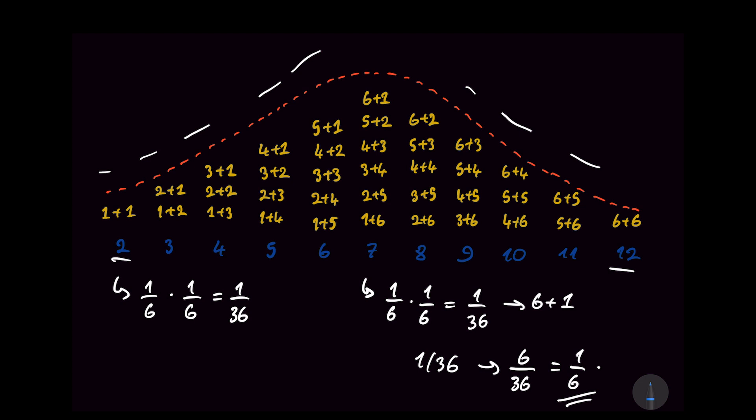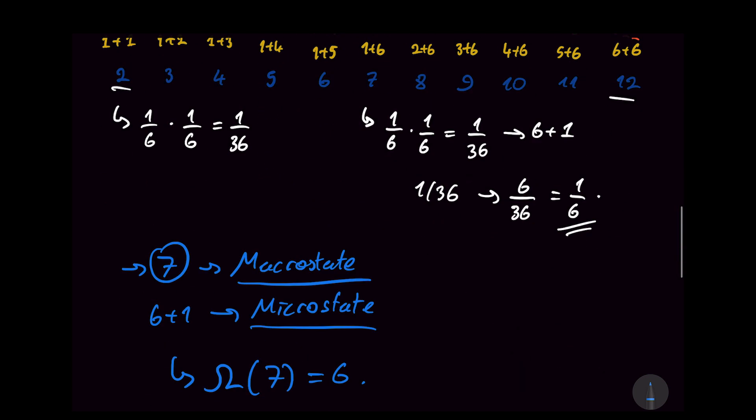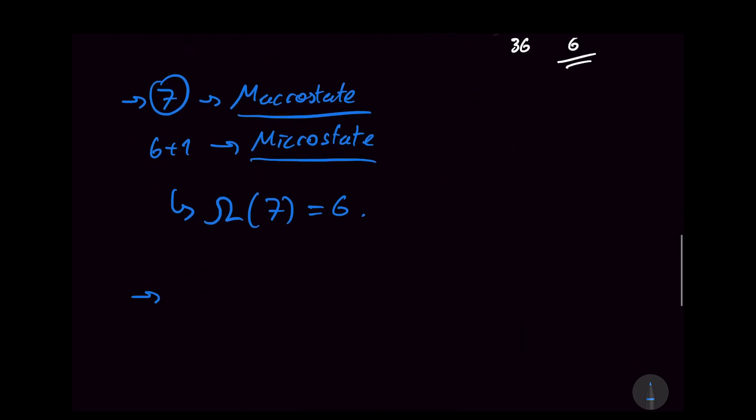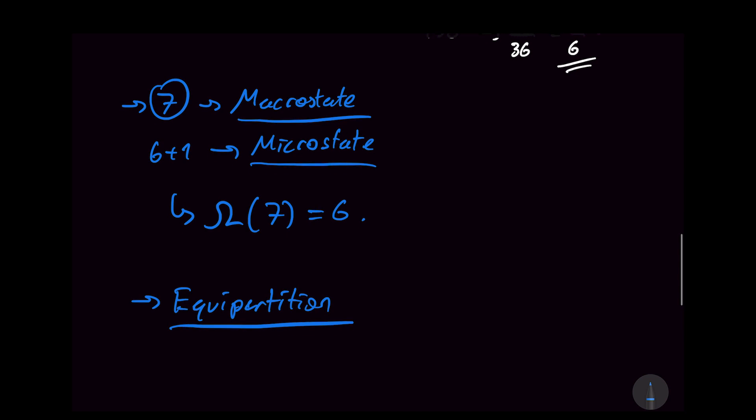That is why 7 is the most likely number to get. This is called the equipartition theorem. And what we are partitioning equally is the likelihood of each of the microstates. But it is the number of the microstates that give rise to the same macrostate that determines the most likely macrostate of the system.